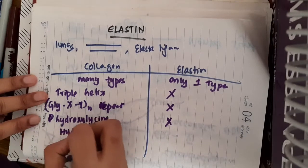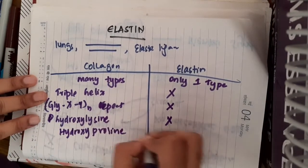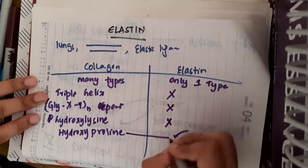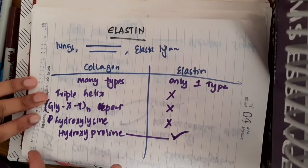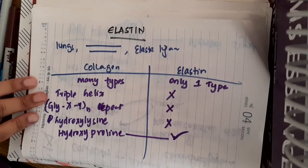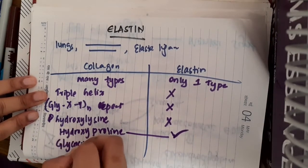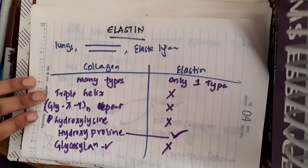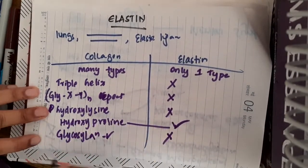Hydroxyproline is present in collagen and it is also present in elastin. Elastin contains only hydroxyproline; it does not contain hydroxylysine. Then glycosylation occurs in collagen, whereas that does not occur in elastin.